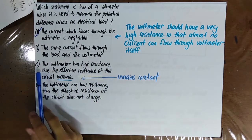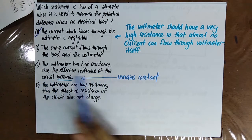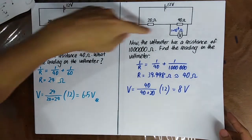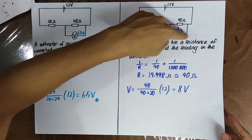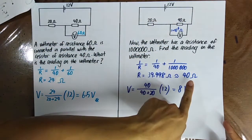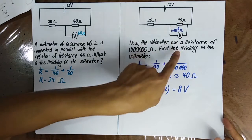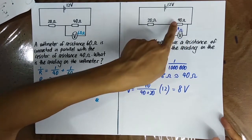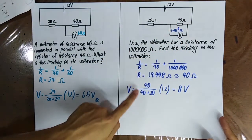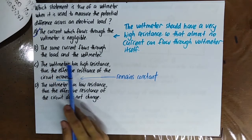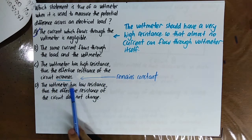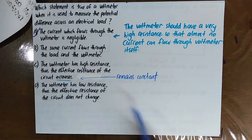'The voltmeter has high resistance, thus the effective resistance of the circuit remains constant.' When the resistance of the voltmeter is very high, the equivalent resistance does not change — initially 40 ohm, and after connecting the voltmeter in parallel it is still 40 ohm. So this statement is correct. 'The voltmeter has low resistance' — wrong. The voltmeter should have a very high resistance.